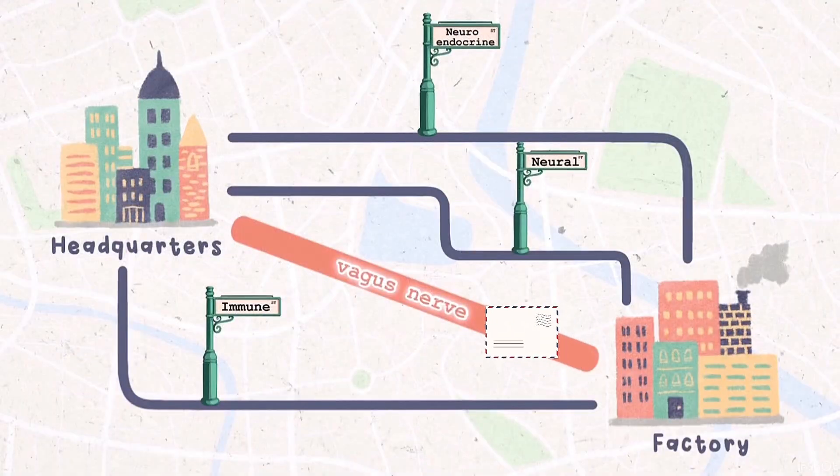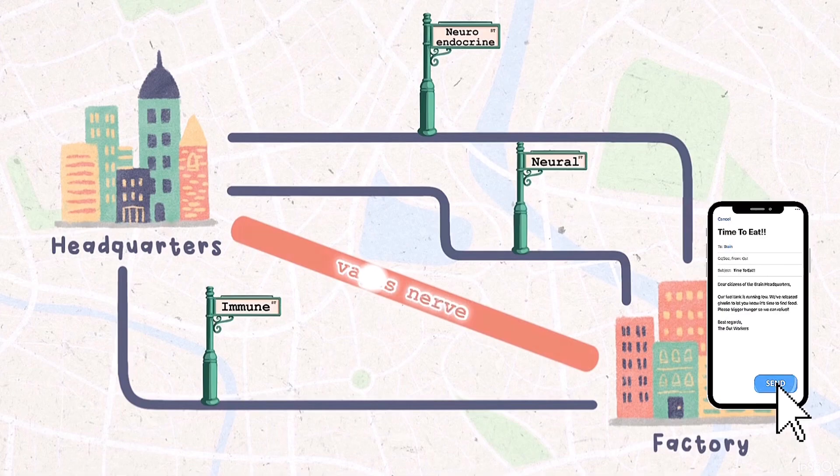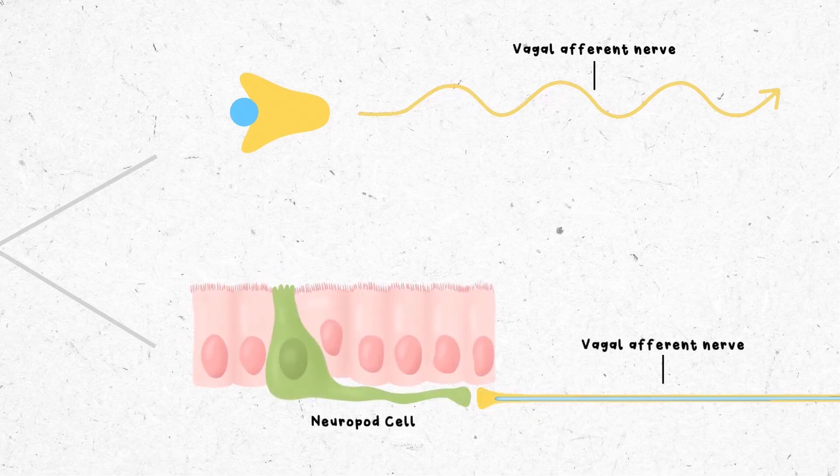But only some compounds can cross the blood-brain barrier like physical mail. Others act indirectly as emails. They bind to vagal receptors or are sensed by neuropod cells, which rapidly convert them into electrical signals for the vagus nerve.